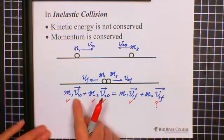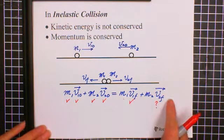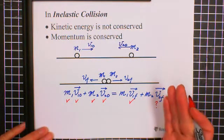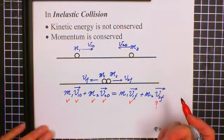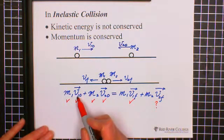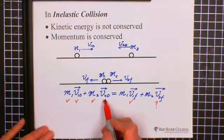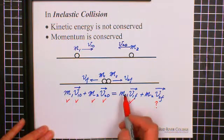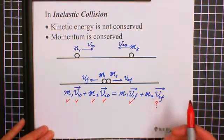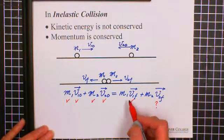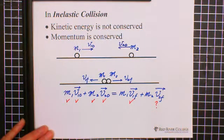Because this is a general expression, when you solve the problem you need to make sure to include the direction and magnitude of V1 initial, V2 initial, and V1 final.